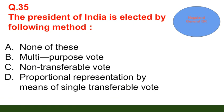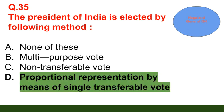Question number 35: The President of India is elected by which method? Option A: none of these; option B: multi-purpose vote; option C: non-transferable vote; option D: proportional representation by means of single transferable vote. The correct answer is option D — proportional representation by means of single transferable vote.